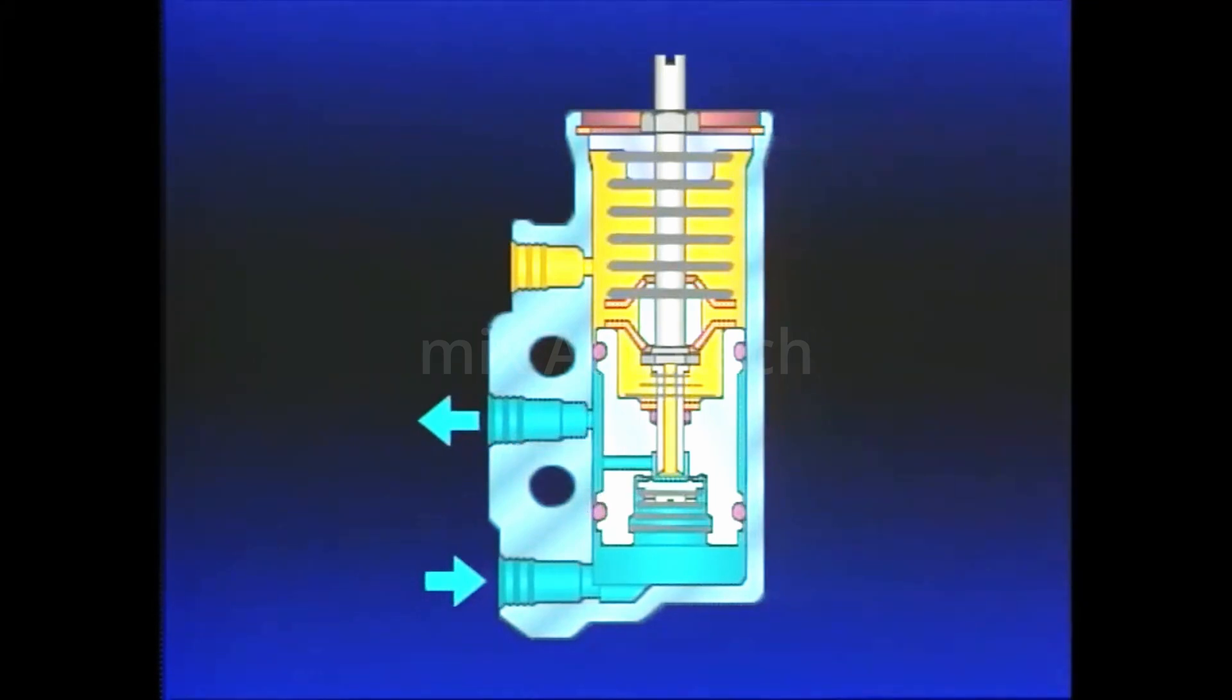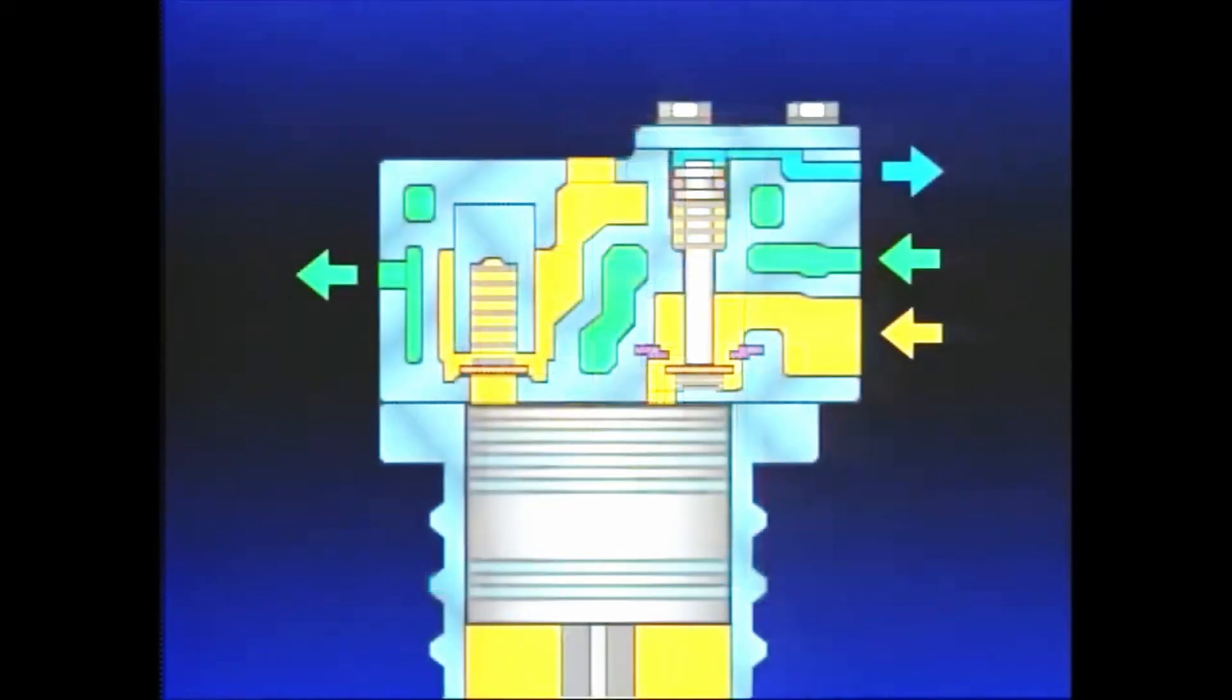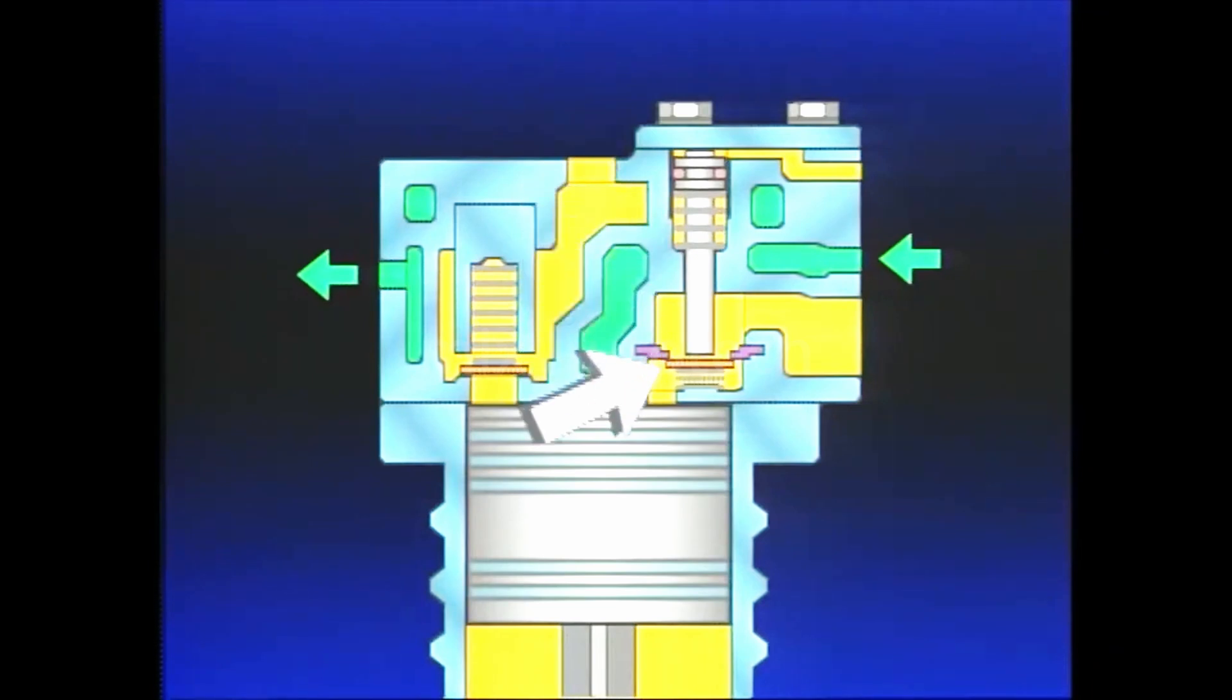Air in the compressor unloader mechanism flows back to the governor and is exhausted. With air pressure removed, springs move the unloader pistons, allowing the inlet valves to return to their seats and the compression of air resumes.